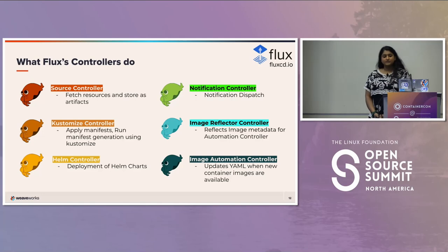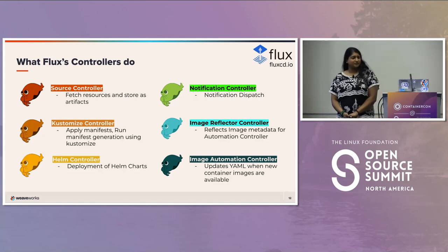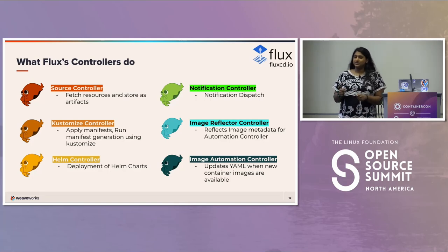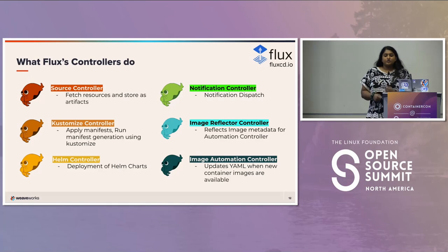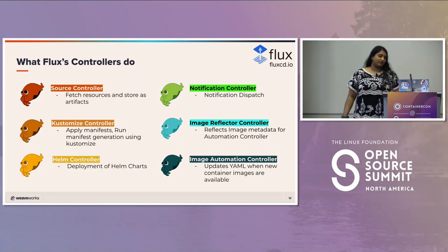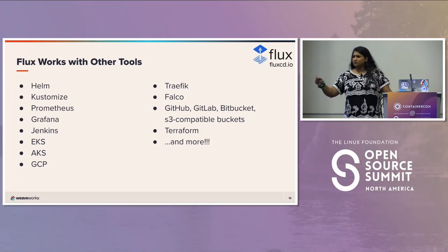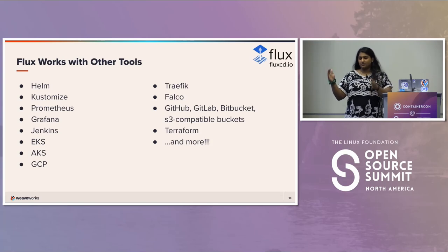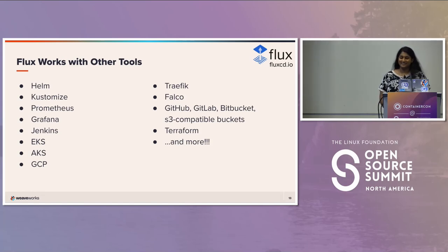Then we have the image controllers. The image reflector controller looks at an image repository and watches for any changes or new versions. The image automation controller actually pushes back to Git — it can apply the YAML to say a new version is out there for this image, go update it in the YAML. It'll push that change back to Git, so it's automated that way. You can also version it using semver and specify a range — you might not want major changes being pushed automatically.